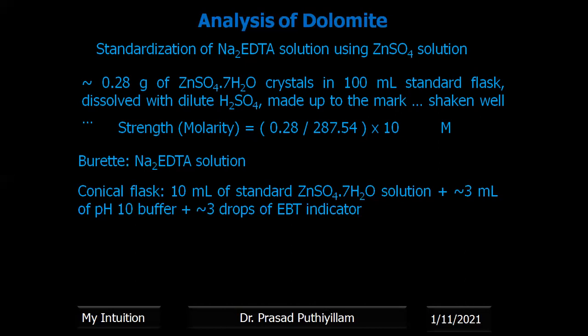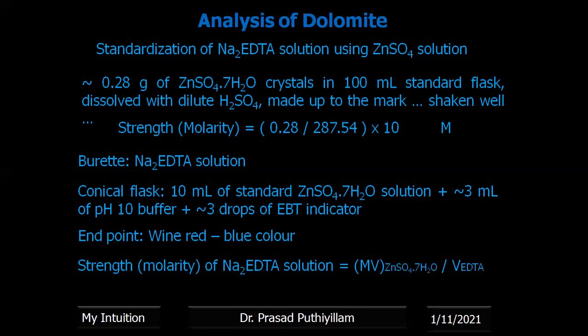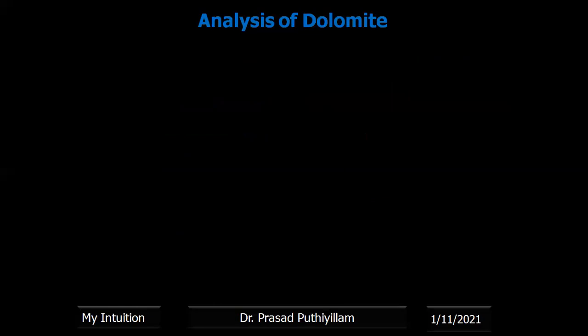Three to four drops of EBT indicator are added. Zinc sulfate, being a zinc ion source, forms a complex with EBT and will be wine red in color. During titration with disodium salt of EDTA, the EDTA initially reacts with zinc sulfate. Once zinc ion concentration is completely consumed, the next drops of EDTA take the zinc ion from the zinc–EBT complex, and EBT is set free. Color changes from wine red to blue, indicating complete reaction. The strength of disodium salt of EDTA can be calculated as M₁V₁ = M₂V₂.